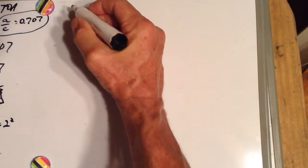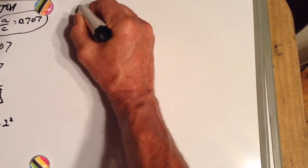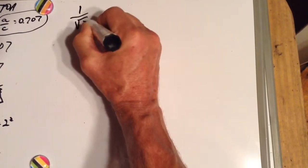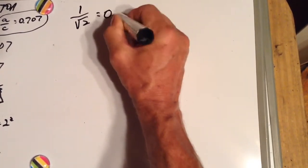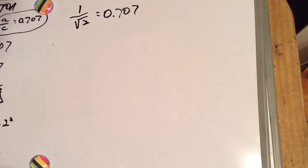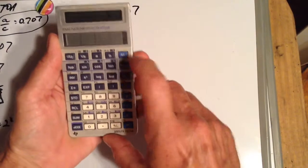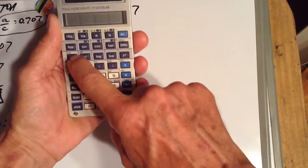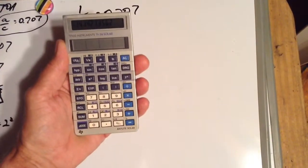I was showing you how you can prove on your calculator that 1 over the square root of 2 equals 0.707. What I did was I took my calculator and I said 2 inverse square root that gives me the square root to 1.414213562.